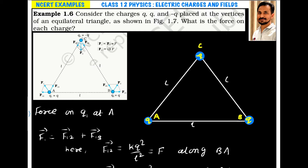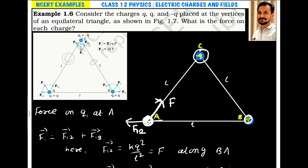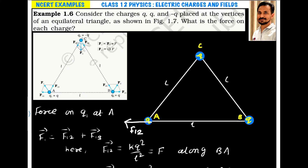Let's start with the force acting on the charge at A. The force acting on Q1 at A, let us call it F1. On charge A, force is acted by two other charges: the charge at B, which is also positive and will repel this charge along direction B to A. Similarly, the negative charge at C will attract charge A along direction A to C. The net force on charge 1 is the vector sum of F12 and F13, where F12 is the force on 1 due to 2 and F13 is the force on 1 due to 3.